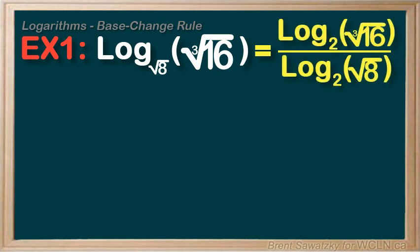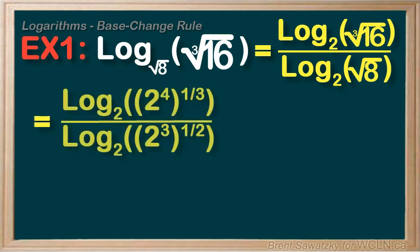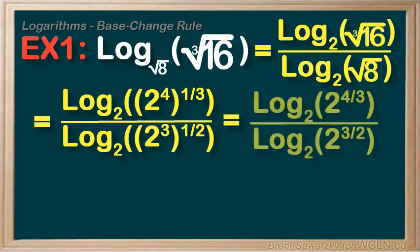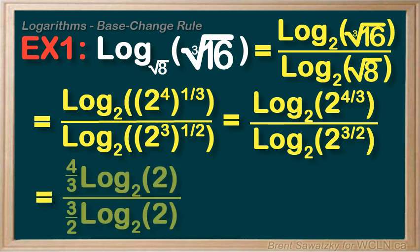Logs and exponents go well together, so let's convert everything to exponent form. 16 becomes 2 to the 4, and 8 becomes 2 to the 3. The cube root becomes one-third and the square root becomes one-half. From there we can combine those exponents, and our power rule brings those exponents to a multiplication. We see that log base 2 of 2 is just 1, and we're left with four-thirds over three-halves.